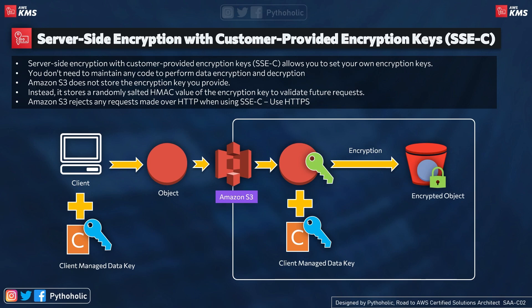With SSE-C, you set your own encryption keys, but Amazon S3 does not store the encryption key you provide. Instead, it stores a randomly salted HMAC value of the encryption key to validate future requests. HMAC, or Hash Message Authentication Code, is a computed signature sent along with the data to authenticate that the data has not been altered or replaced. The client manages the data key, sends it along with the object, and it gets encrypted and stored as part of the encrypted object.